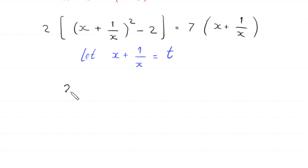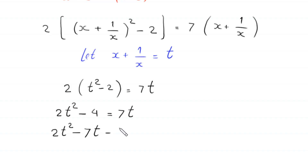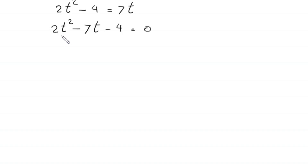With the substitution t equals x plus 1 over x, the equation becomes 2t squared minus 2 equals 7t. Expanding gives 2t squared minus 4 equals 7t. Moving 7t to the left hand side, we get the quadratic equation 2t squared minus 7t minus 4 equals 0.